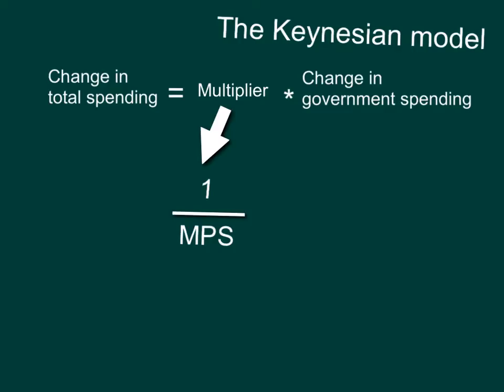Hi, it's John Bauman again. Let's go over the math part of the Keynesian model. As you know, John Maynard Keynes recommended for the government to increase its spending during times of economic recessions, or when the economy is slow or unemployment is high. So he would say let's increase government spending.